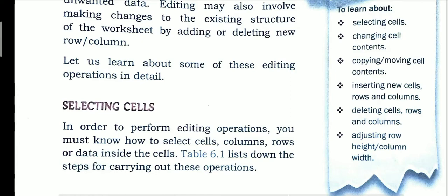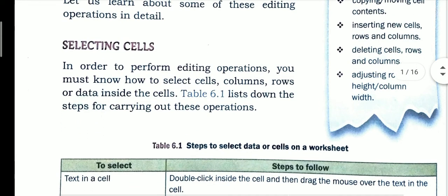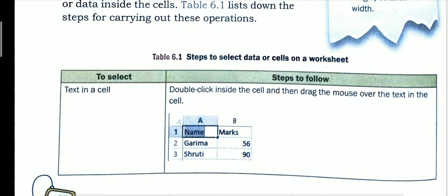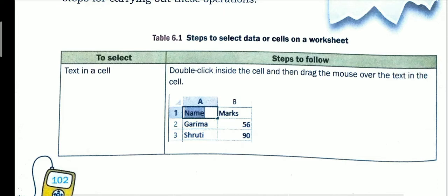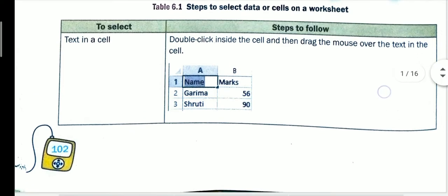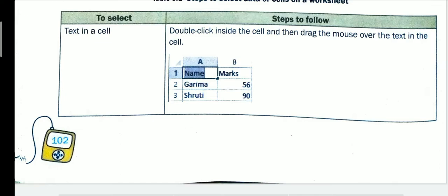The first topic is selecting cells. There are many ways to select a cell in Excel, and some options to select the content of a cell or multiple cells. The first method is to select the text in a cell: double-click inside the cell, then drag the mouse over the text. After dragging, the content of the cell will be selected. As you can see in the figure, cell A1 contains the text 'name', which is selected and editable.